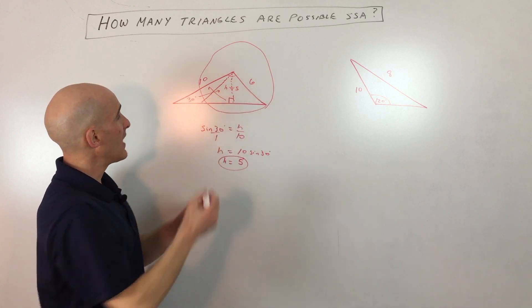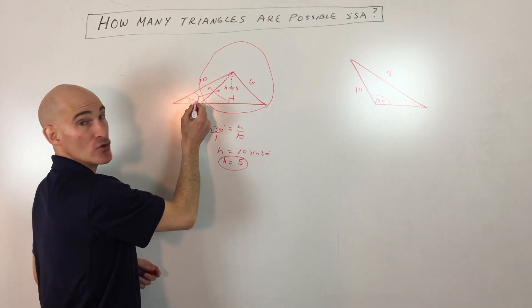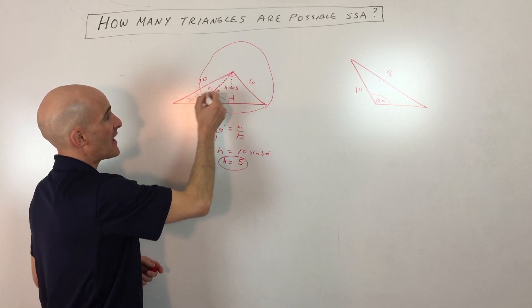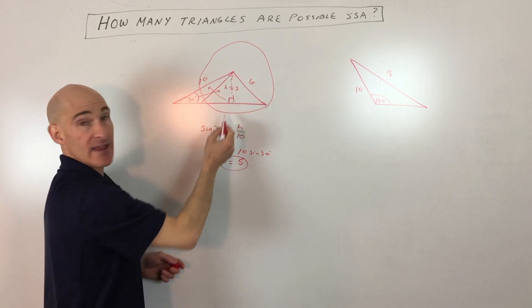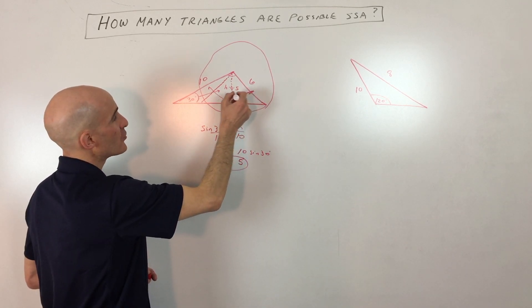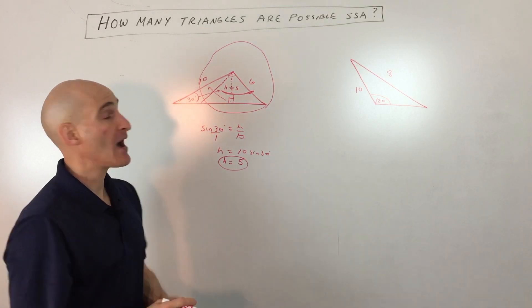What you want to analyze is you've got this longer side here, adjacent to the acute angle, and the side that's across from that acute angle. If this side is shorter than the altitude, like if it was only 4, when you rotate it, it wouldn't be able to reach the opposite side, so there'd be no triangle possible.